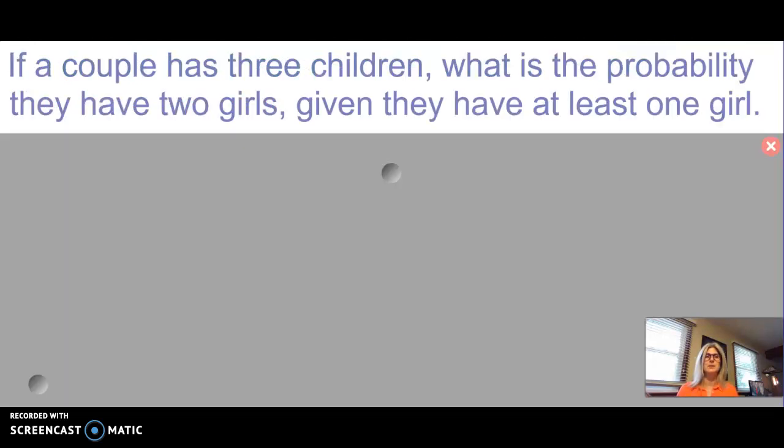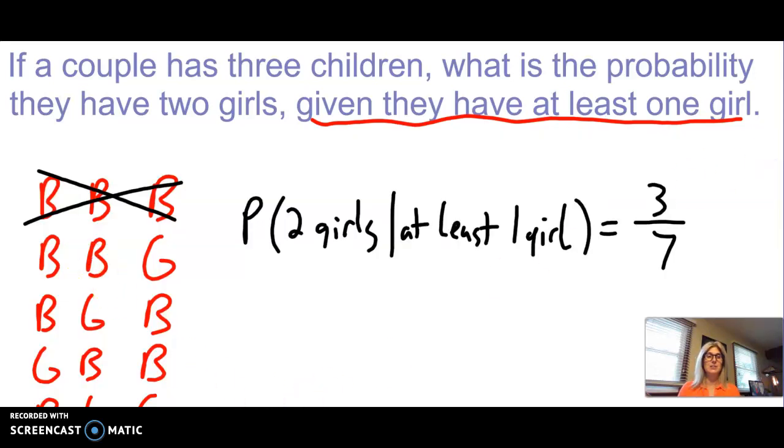I want you to use the sample space for this problem. Give that a try. If a couple has three children, what is the probability they have two girls given they have at least one girl? So write out the sample space. Start with the given they have at least one girl. So you're going to eliminate the extraneous data. And then what is the probability of having two girls? I'm going to show the answer. So pause the video if you have not already. Here it is. Did you get three out of seven?